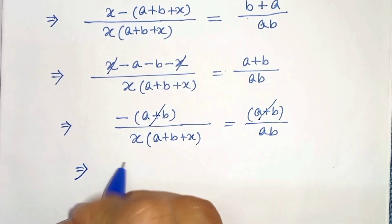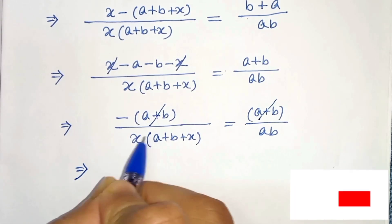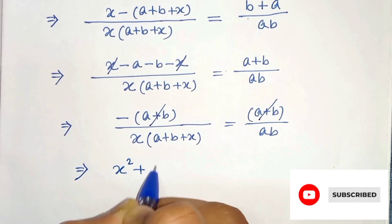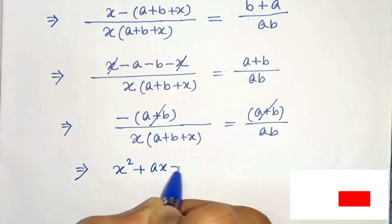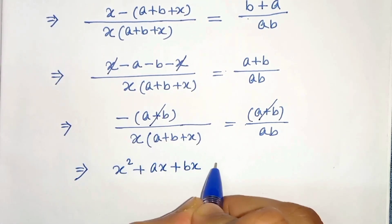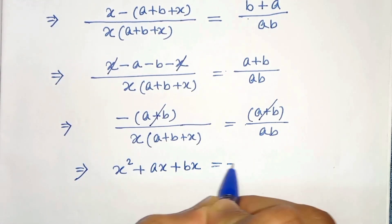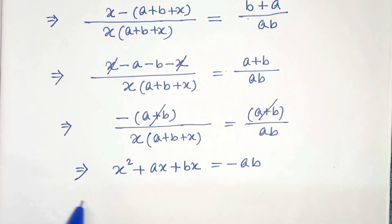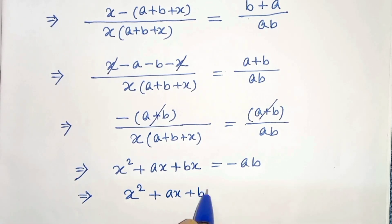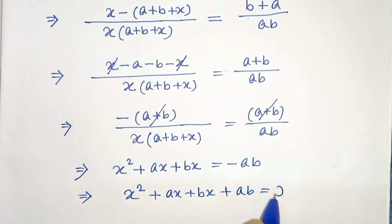So we get x times (a + b + x) equals minus ab. Expanding: x squared plus ax plus bx equals minus ab. In the next step, x squared plus ax plus bx plus ab equals 0.